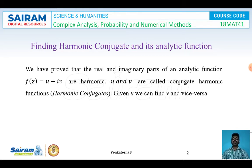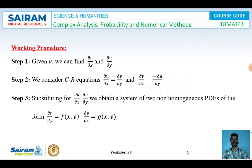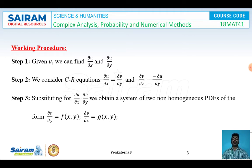Since u and v are harmonic, we can easily find the harmonic conjugate. u and v are called harmonic conjugates of each other. If u is given, v will be the harmonic conjugate of u, and if v is given, u will be the harmonic conjugate of v. Working procedure, step one: given u, we find ∂u/∂x and ∂u/∂y; given v, we find ∂v/∂x and ∂v/∂y.